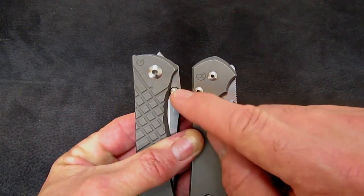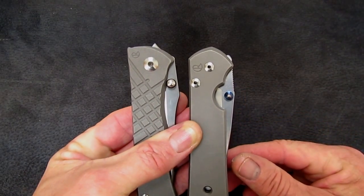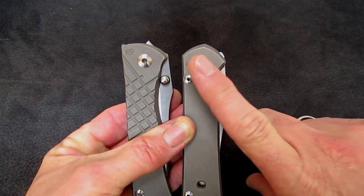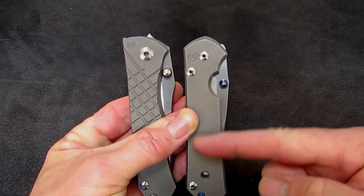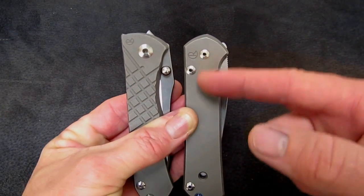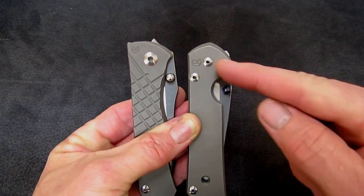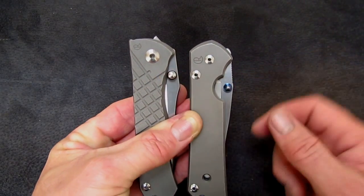We can see that the angle of this ray on the Sebenza would be closer to zero, so that angle is more acute than that on the Umnumzaan, and the distance from stud to pivot is longer on the Sebenza.